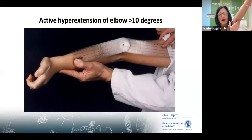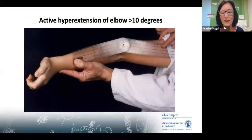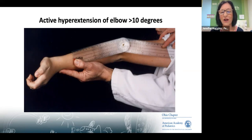At the elbow, can you hyperextend — extend the elbow to minus 10 degrees? You can really see that by inspection; you don't need a goniometer, though PT and OT would take formal measurements. That would be an additional two points, bringing us up to six in the Beighton score if you can do this on each side.